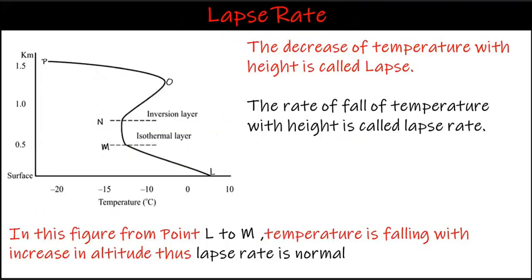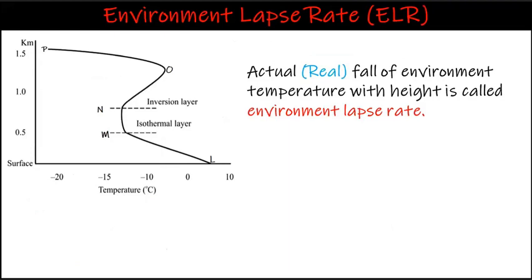The rate of fall of temperature with height is called lapse rate. In this figure, from point L to M, temperature is falling with increase in altitude, thus lapse rate is normal. Environment lapse rate is the actual fall of environment temperature with height.